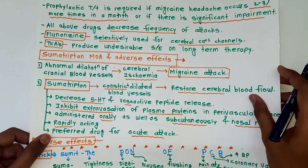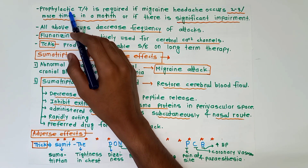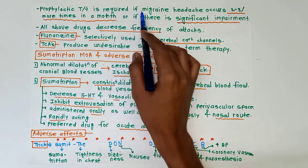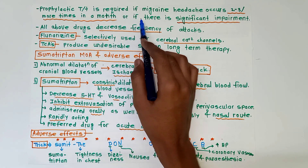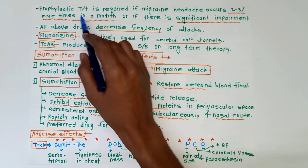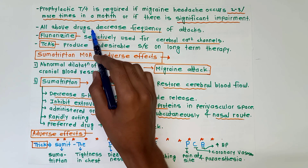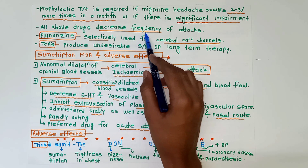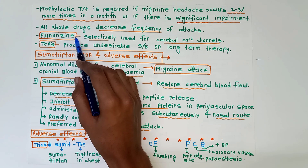We will go a little deeper into prophylaxis. Prophylactic treatment is required if migraine attacks occur two to three or more times in a month, or if there is significant impairment during the migraine attack. All the above drugs — anticonvulsants, beta blockers, calcium channel blockers, and antidepressants — will decrease the frequency of attacks.